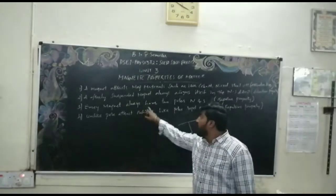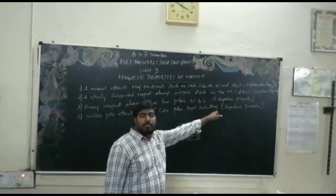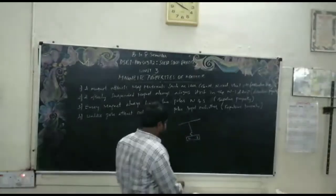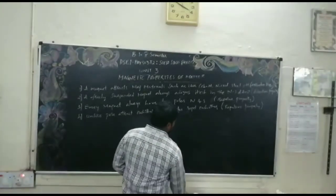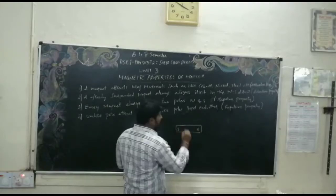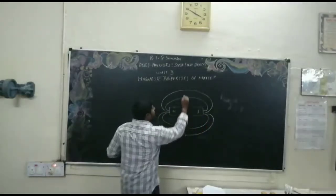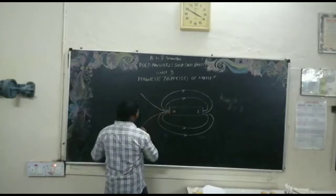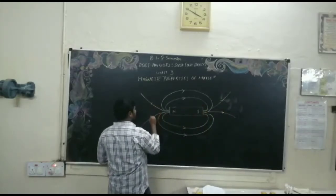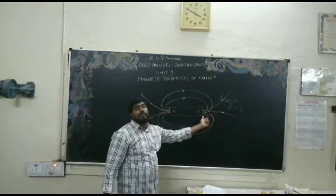The third property is the bipolar property: every magnet always has two poles — north and south. This is our bar magnet; this is the north pole and this is the south pole. The magnetic field lines go out from the north and end at the south.